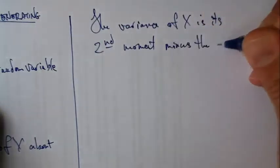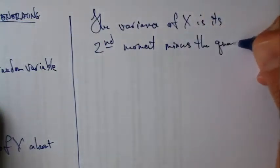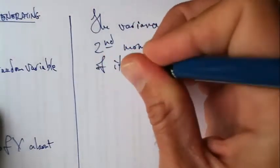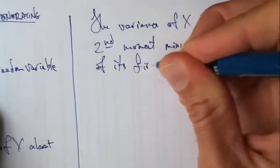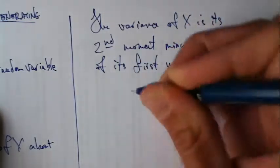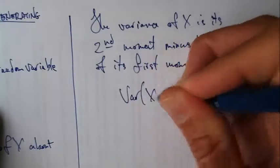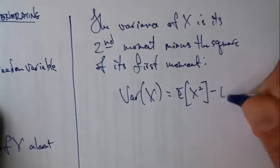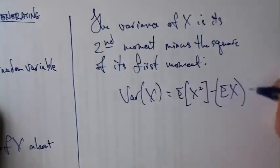the variance of X is its second moment minus the square of its first moment.